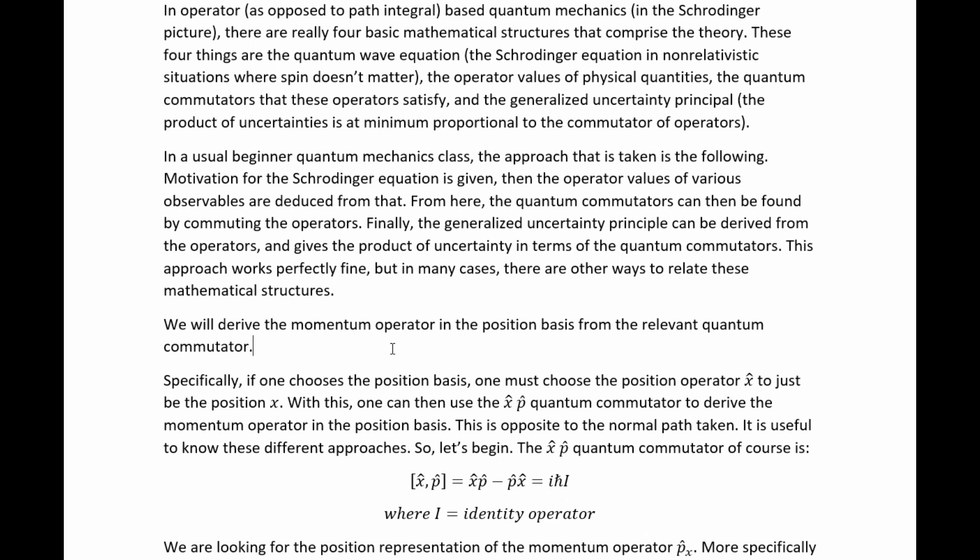We will derive the momentum operator in the position basis from the relevant quantum commutator. Specifically, if one chooses the position basis, one must choose the position operator x hat to just be the position x. With this, one can then use the xp quantum commutator to derive the momentum operator in the position basis. This is the opposite to the normal path taken. It is useful to know this different approach just as an extra dimension, an extra bit of richness to your understanding of quantum mechanics. So let's begin.